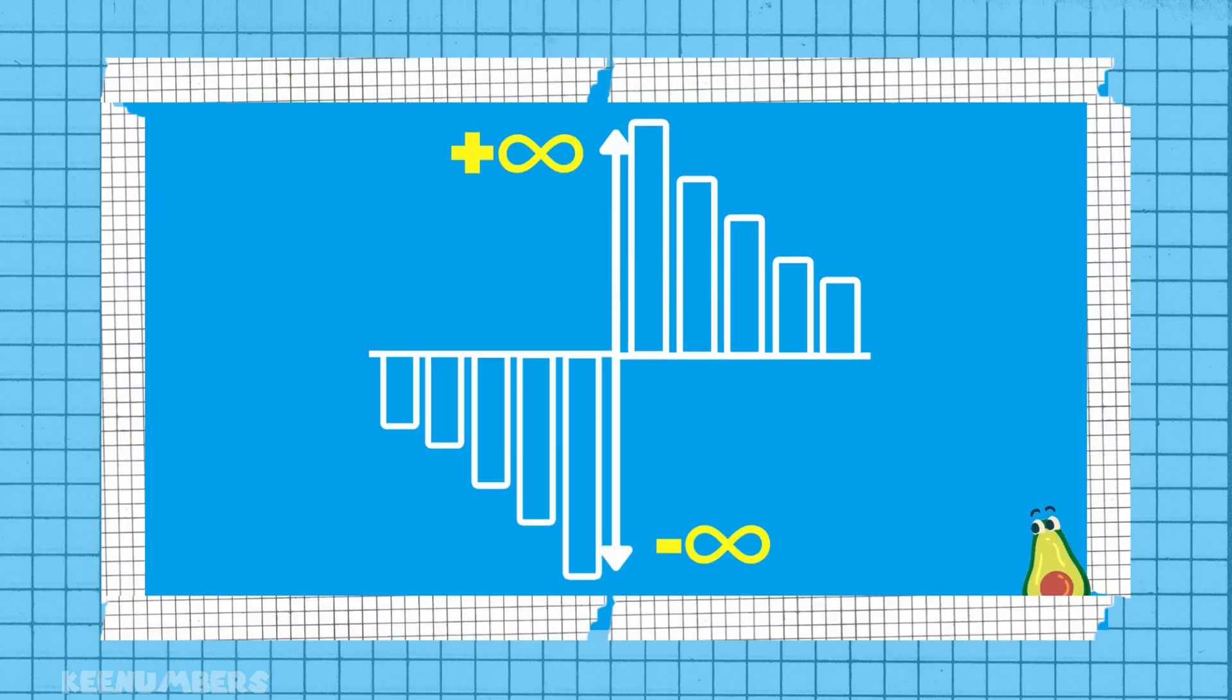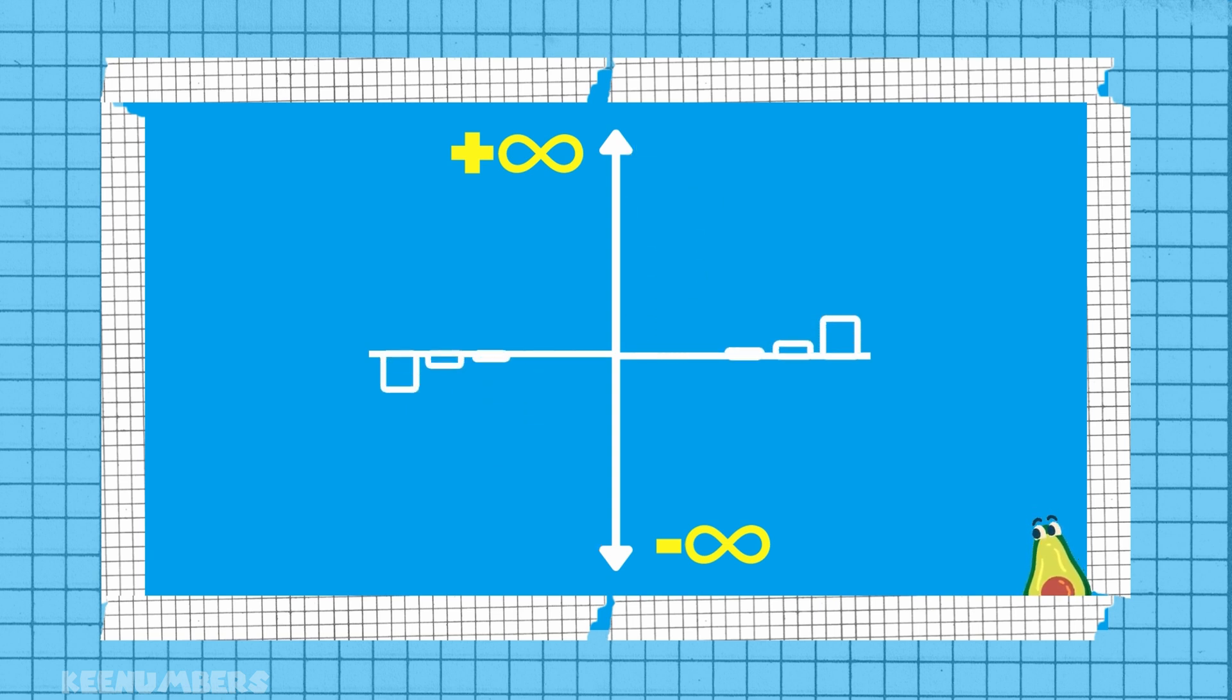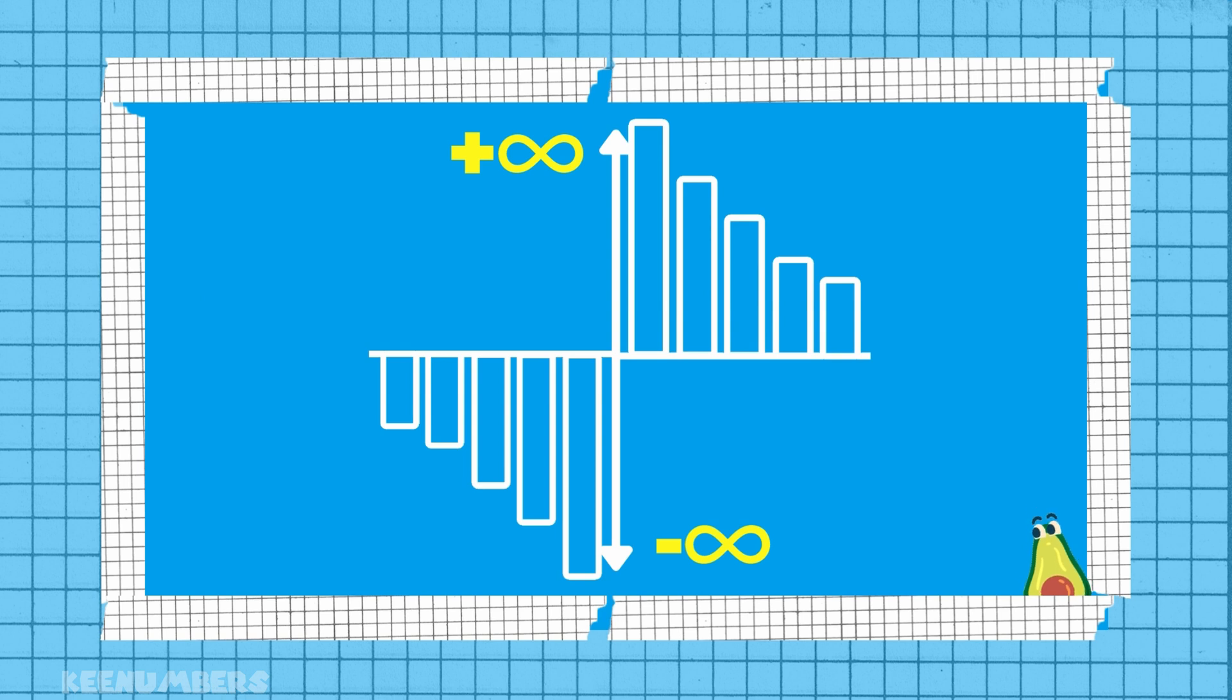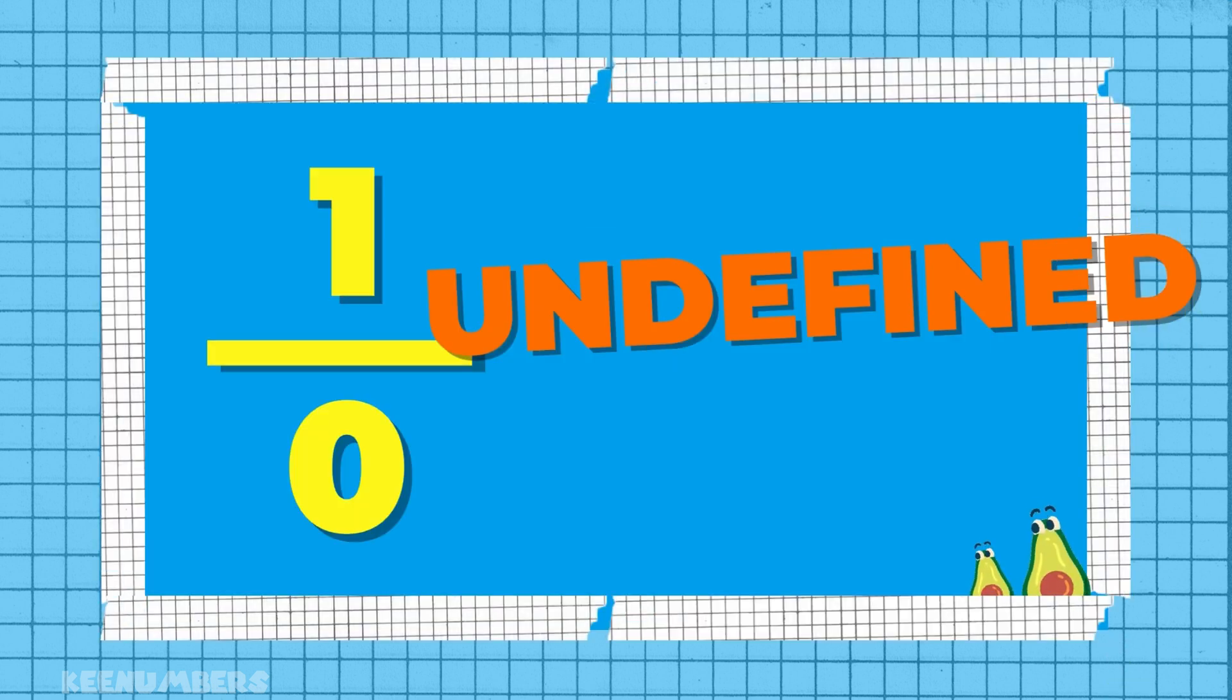When you divide by smaller and smaller positive numbers, it looks like it's going towards infinity. It gets bigger and bigger. But when you divide by bigger and bigger negative numbers, it looks like it's going to negative infinity. So it's undefined. That is, it is not defined. We can't divide by zero. It doesn't work.